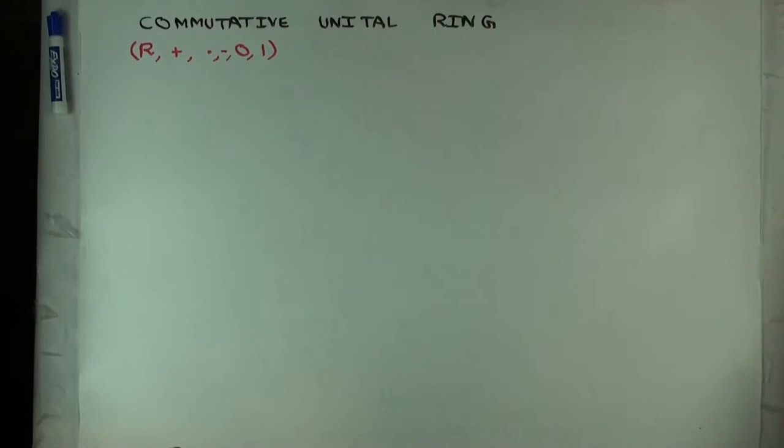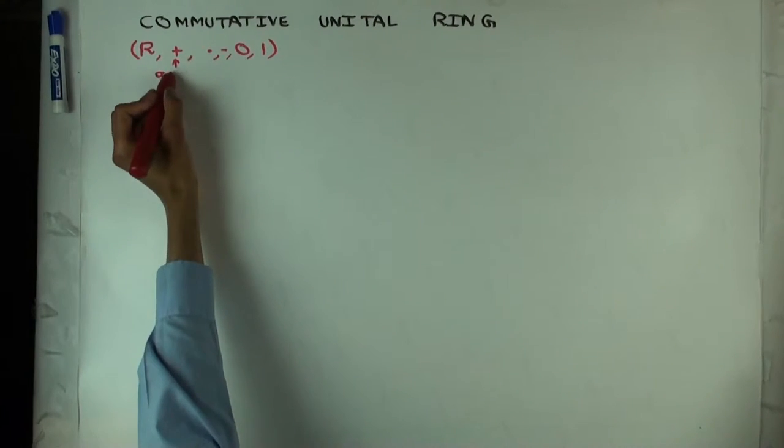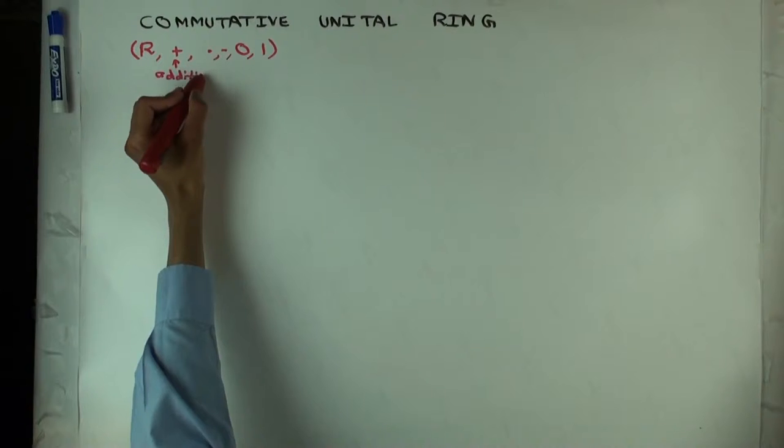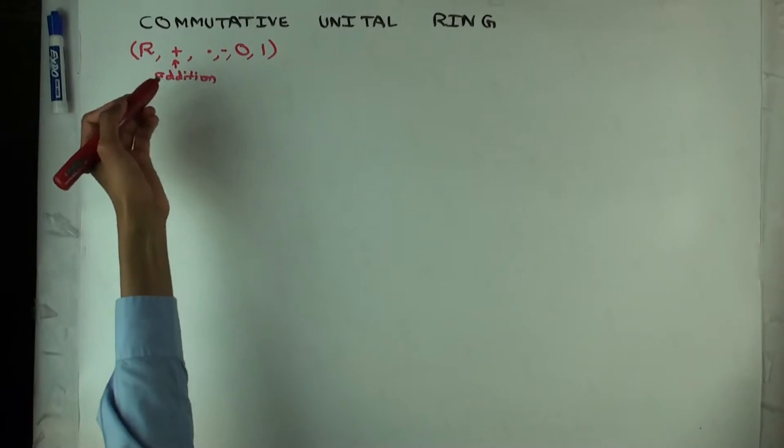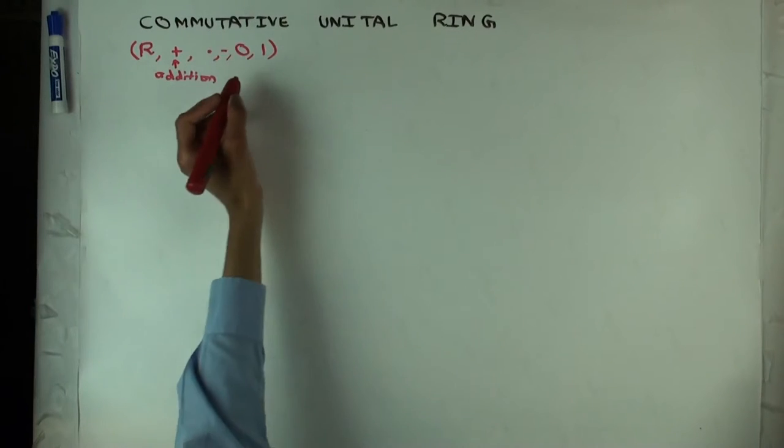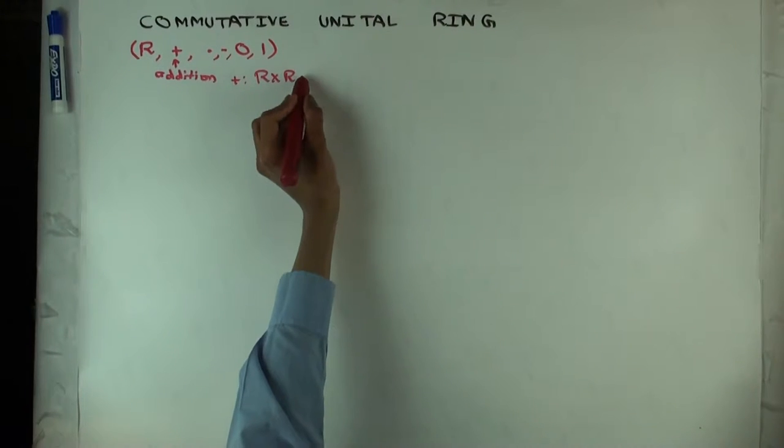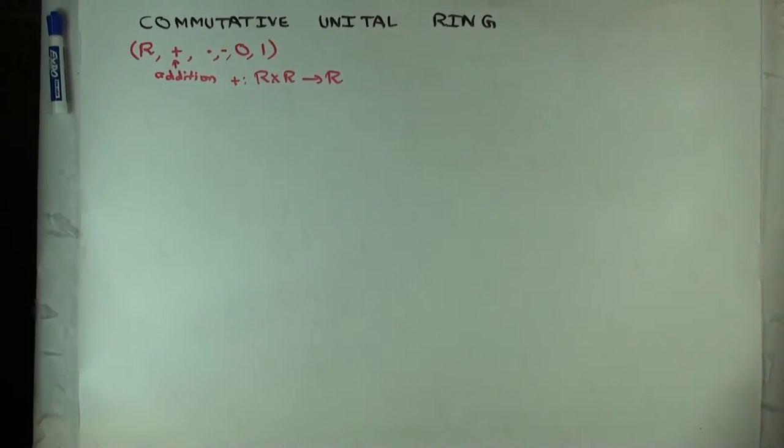So the set is R. Addition, this is called addition, and we use the same jargon as we use for usual additions. We talk of sums and summations and things like that. Addition is a binary operation, so it takes two ring inputs and outputs one ring element.